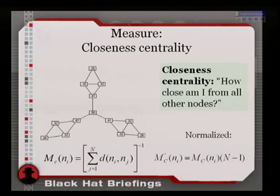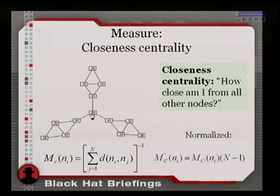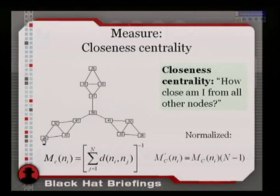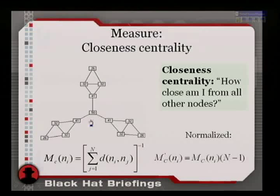Closeness centrality: how close am I to all other nodes? In the star graph, the closest one is the one in the middle — it has the highest value because it's easiest to reach every node. The ones on the outer edges have the lowest value. As you get closer to the middle, you're closer to all other nodes.